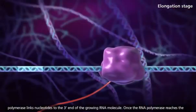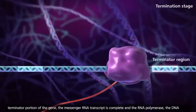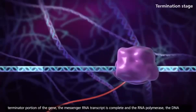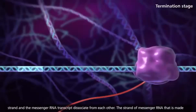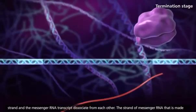Once the RNA polymerase reaches the terminator portion of the gene, the messenger RNA transcript is complete, and the RNA polymerase, the DNA strand, and the messenger RNA transcript dissociate from each other.